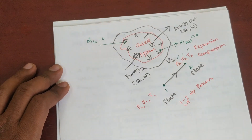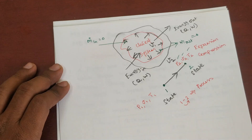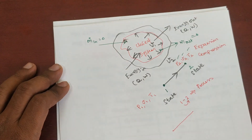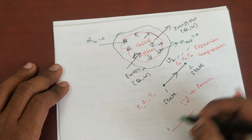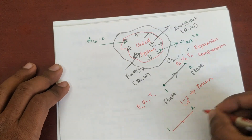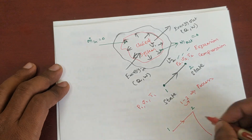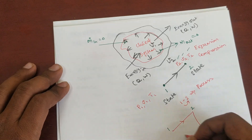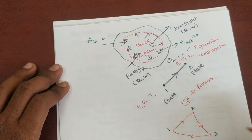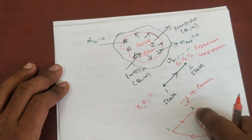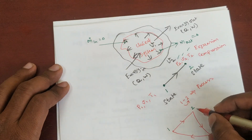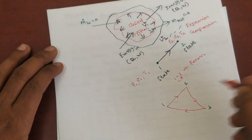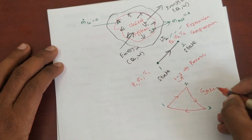A cycle is called a cycle when two or more processes are combined. For example, take point one, two, and three — process 1-to-2 is one process, 2-to-3 is a separate process, and 3-to-1 is a separate process. Together, this is called a cycle. Similarly, four processes — 1-2, 2-3, 3-4, and 4-1 — also form a cycle.